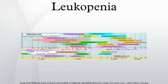Leukopenia is a decrease in the number of white blood cells found in the blood, which places individuals at increased risk of infection. Neutropenia, a subtype of leukopenia, refers to a decrease in the number of circulating neutrophil granulocytes, the most abundant white blood cells. The terms leukopenia and neutropenia may occasionally be used interchangeably, as the neutrophil count is the most important indicator of infection risk. This should not be confused with agranulocytosis.